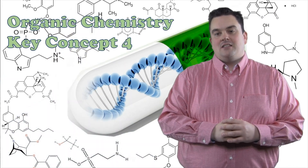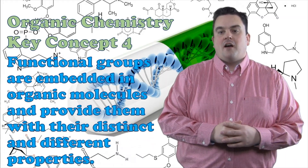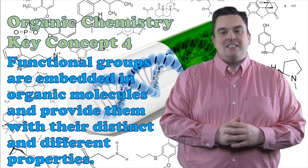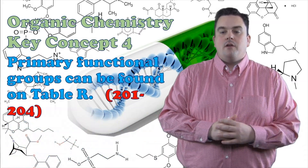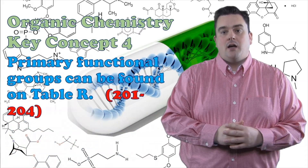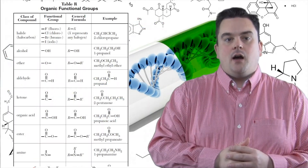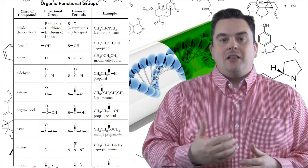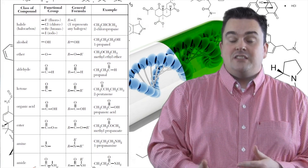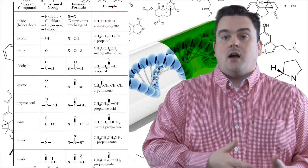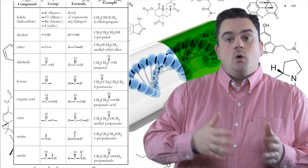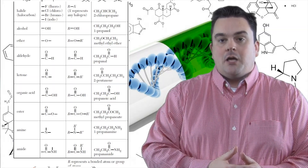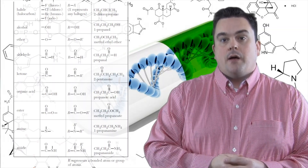Organic chemistry key concept four. Functional groups are embedded in organic molecules and provide them with their distinct and different properties. Primary functional groups can be found on table R. Looking at table R, we can determine which class of compound we have by looking at the functional group column to see what is attached to our carbon chain. We then go over to the example column to figure out the proper way to name that particular organic compound.